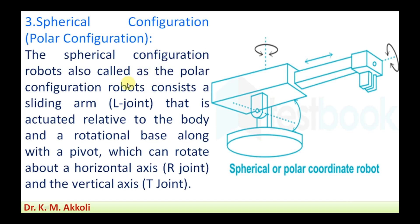The third one is the spherical configuration, also called the polar configuration. These robots consist of a sliding arm actuated relative to the body and a rotational base. The base rotates along with the pivot, and the pivot also moves the arm up and down.